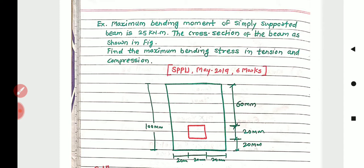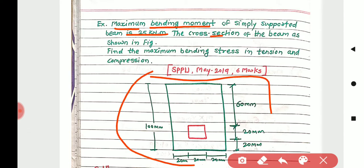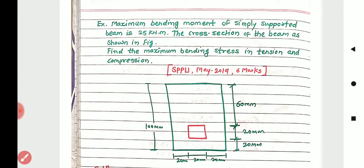This type of example is asked frequently — it was asked in May 2019 for six marks. Please first read the example carefully, note down what is given, and then try to solve it step by step. The maximum bending moment of a simply supported beam is 25 kilo-newton-metre. The cross-section of the beam is as shown in the figure, and we need to find the maximum bending stress in tension and in compression.